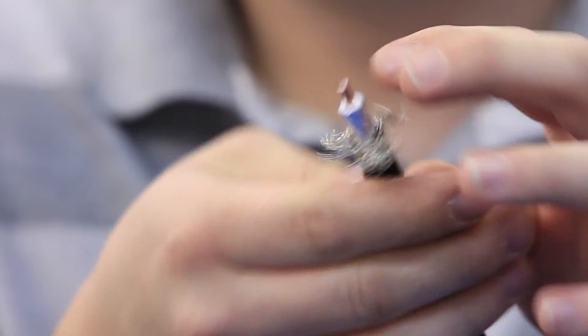Peel the braided metal shielding back so it looks like this. Make sure that there's no metal shielding in contact with the center pin.